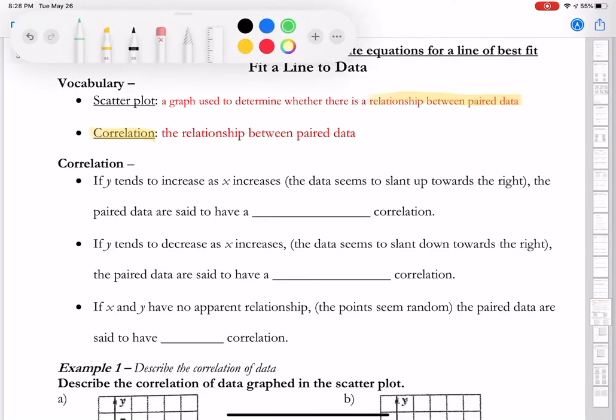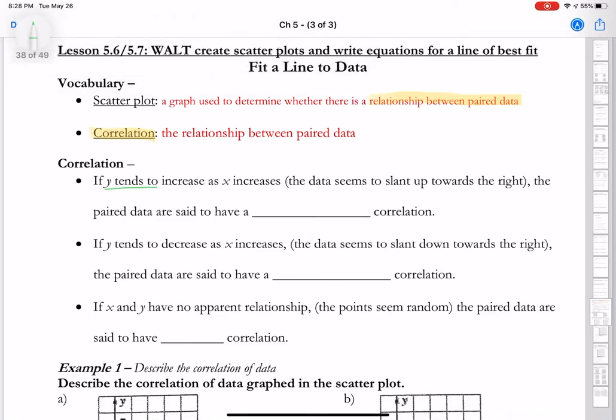Now we can figure out what kind of correlation scatter plots have. If y increases as x increases, it's going to have a positive correlation. As y decreases and x increases, it's a negative correlation.